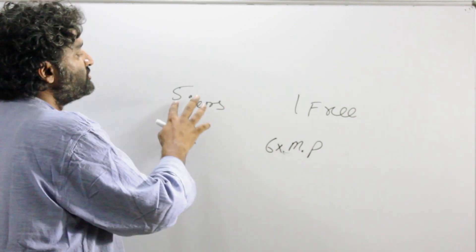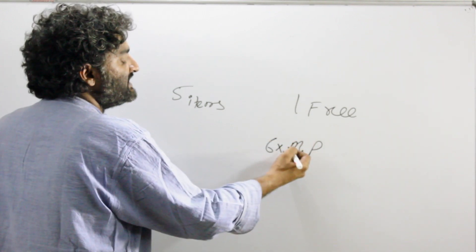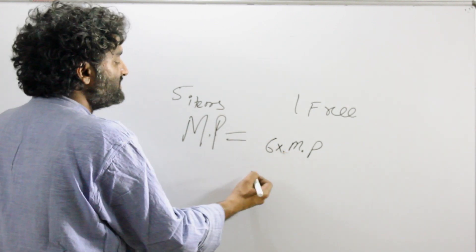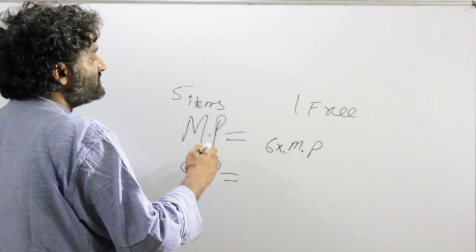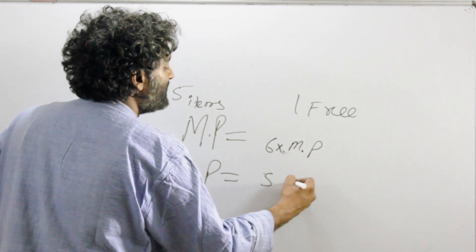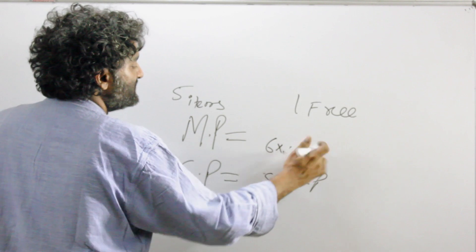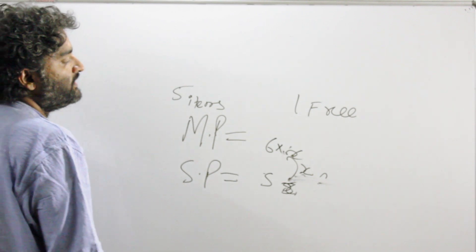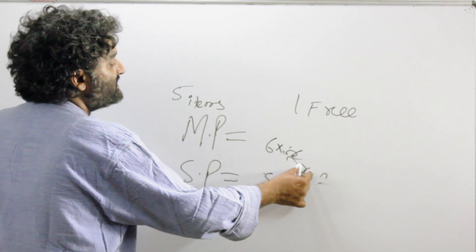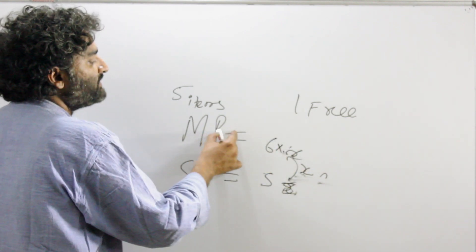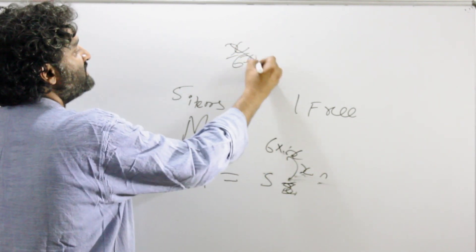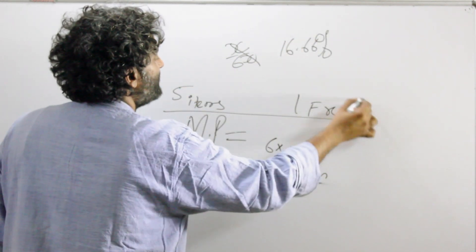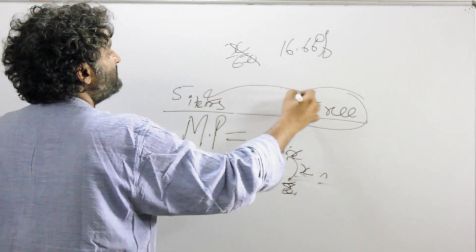There was no other discount. The overall mark price should have been six mark price, but the overall selling price — what you paid — was five mark price. So basically it was 6X and it became 5X. There is a discount of X. In percentage terms, there is a discount of X on 6X. We calculate discount on the mark price only. So X by 6X = one by six, we get 16.66% discount.